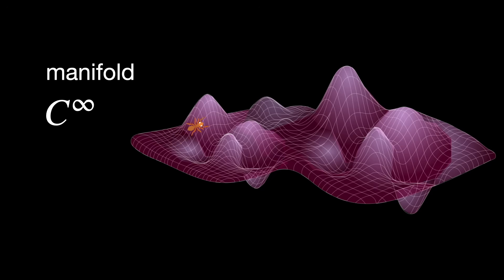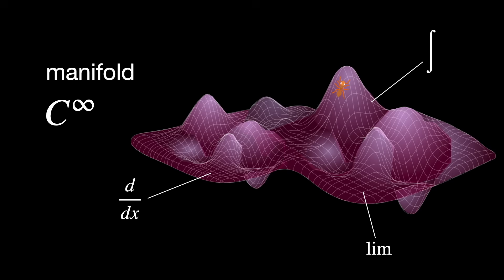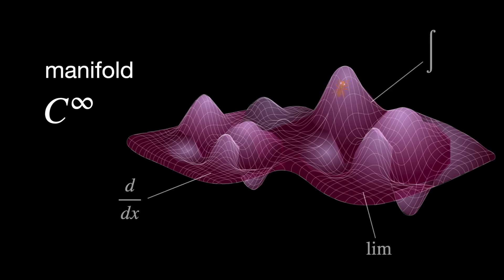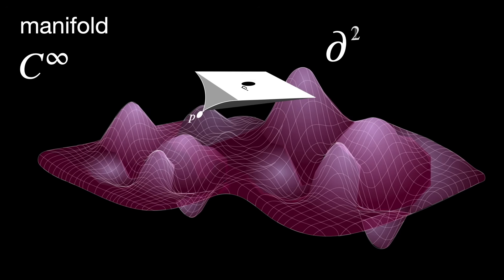C-infinity means the space is smooth — you can do calculus on it, and you can take derivatives as many times as you like. Everything behaves nicely: no sharp corners, no jumps. Think of this as saying you can draw curves and do math on them without any weird breaks.